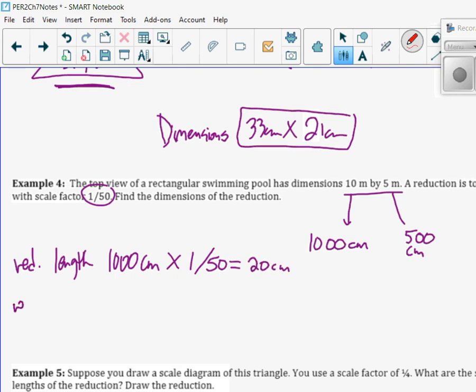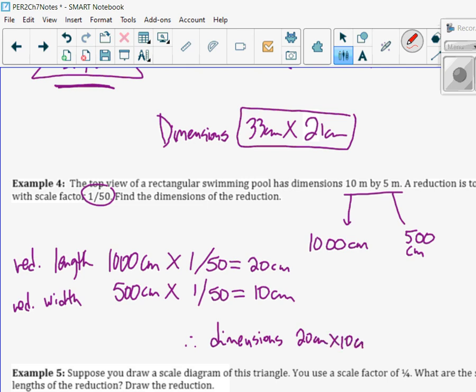The reduction width would be 500 centimeters times one divided by 50. And I get 10 centimeters. So then it says find the dimensions. Therefore, the dimensions would be 20 centimeters by 10 centimeters.